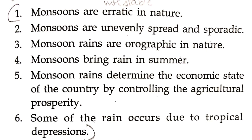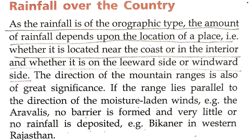Orographic rainfall is another term used for this type. Monsoons bring rain in summer; the monsoon rains determine the economic state. Some rain also occurs due to tropical depressions. Since the rainfall over the country is mainly of the orographic type, the amount of rainfall depends upon the location of a place — whether it is near the coast or in the interior, whether it is landlocked, or whether it is on the leeward or the windward side. The direction of the mountain ranges is also of great significance.